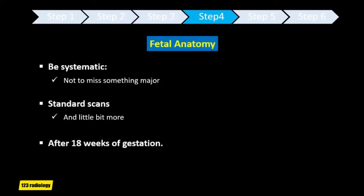After that, you can do a basic fetal anatomy survey. During this survey, be systematic — this is the only way not to miss something major. Do standard scans and go a little beyond the requisites of the major societies. Fetal anatomy may be adequately assessed by ultrasound after 18 weeks of gestational age. Some structures can be difficult to visualize due to fetal size, position, movement, abdominal scars, and increased maternal abdominal wall thickness.